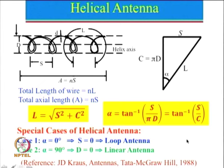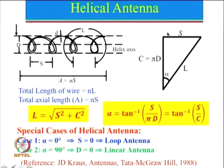There are special cases of helical antenna. Case one: when alpha equals 0, that means s equals 0 and the turns repeat at the same place, giving rise to a loop antenna. Case two: when alpha equals 90 degrees, the wire is going only in one direction. The diameter will be equal to 0 and this will be nothing but a linear antenna. In a simpler way, one can think of a helical antenna as a combination of a loop antenna and a linear antenna.